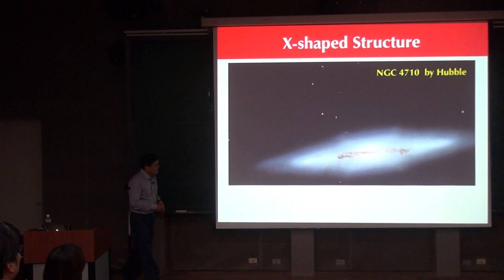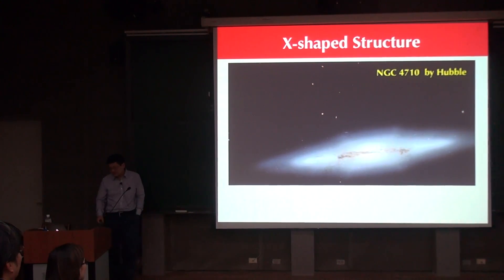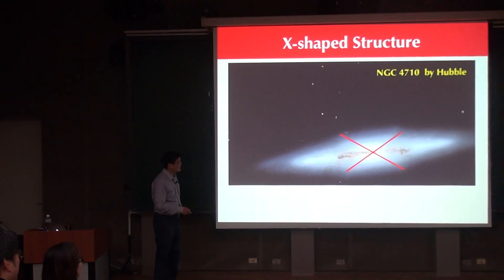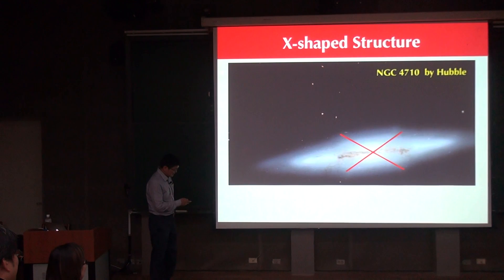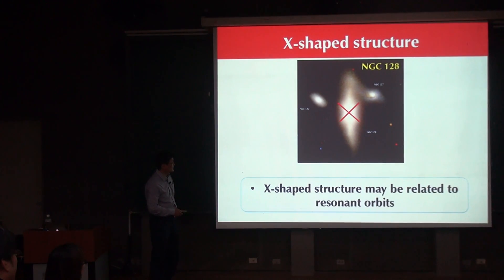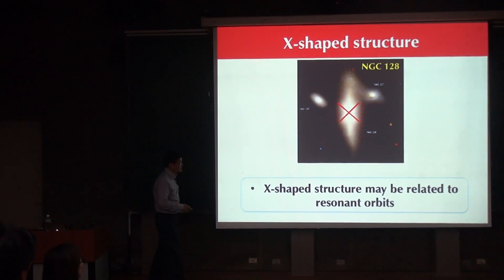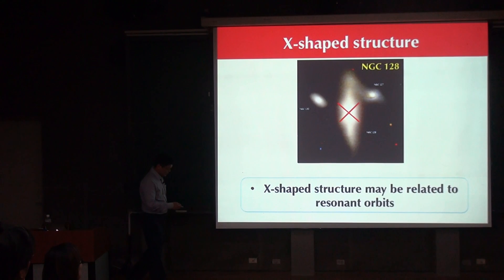For the last few years, people have been very interested in the so-called X-shaped structure. This shows one image of the edge-on galaxy NGC 4710 — if you stare at this image long enough, you see an X-shaped structure. This is actually not so rare in the universe. These X-shaped structures are thought to be related to resonant orbits in bar galaxies, and these are the sorts of questions we want to understand in the case of the Milky Way.